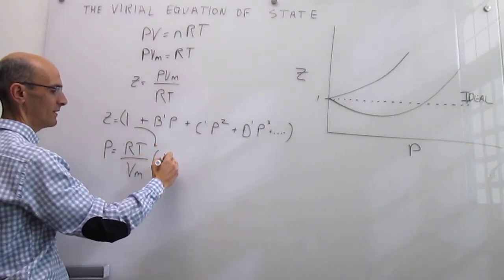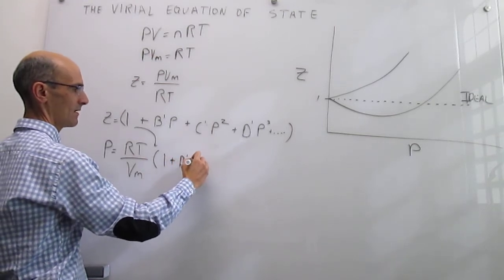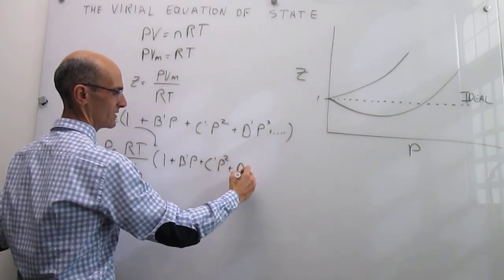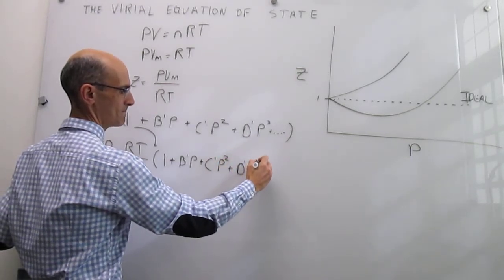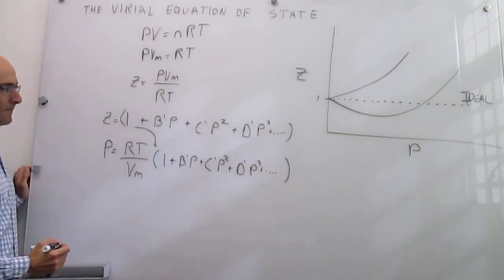So what we can have here is 1 plus B' P plus C' P squared, and here you can add as many terms as you wish. This is your real gas virial equation of state.